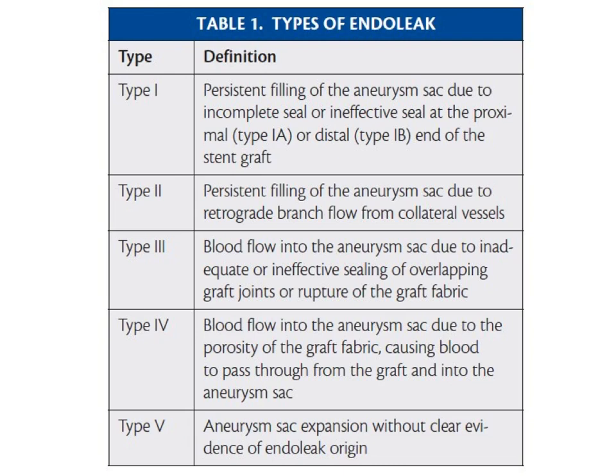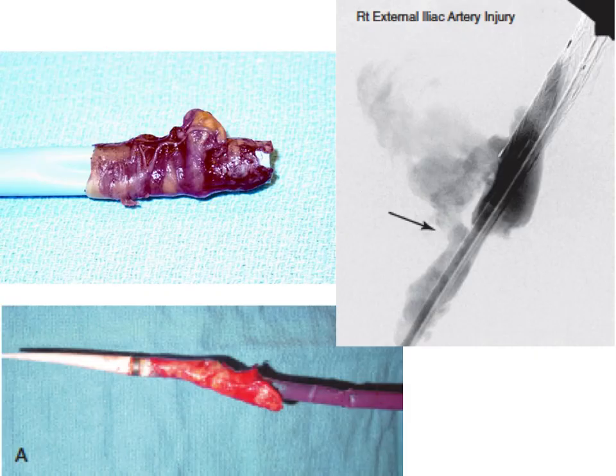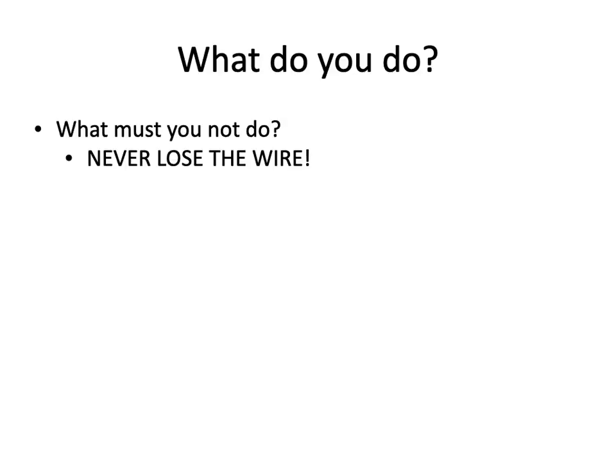TVAR complications include various types of endoleaks. In consent discussions, mention the risk of endoleak and graft migration, the risk of re-intervention, and the need for long-term surveillance. Iliac-on-a-stick is exceedingly rare with lower profile devices today, but iliac rupture does happen in a less dramatic way. The first rule: never lose wire position, because as long as you have the wire you still have options.